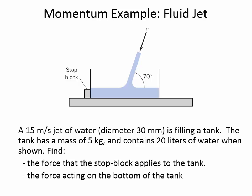In the first example, there is a tank of water, and a circular fluid jet coming in with a defined diameter. The jet moves at 15 meters per second and is filling the tank. The tank itself has a mass of 5 kilograms, and at this moment there are 20 liters of water inside. We need to find the force the stop block applies to the tank and the force acting on the bottom of the tank. The control surface runs along the outside of the control volume, and where the jet crosses through it, the jet diameter is 30 millimeters.